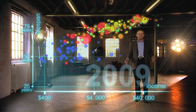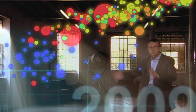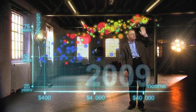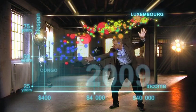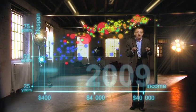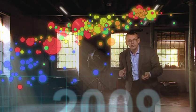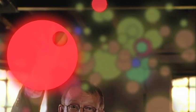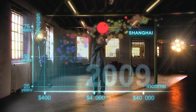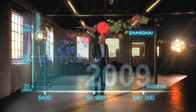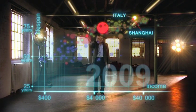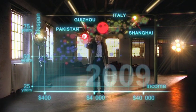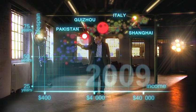And now we can see the world today in the most up-to-date statistics. Most people today live in the middle, but there are huge differences between the best and worst of countries, and also huge inequalities within countries. These bubbles show country averages, but I can split them. Take China — I can split it into provinces. There goes Shanghai: it has the same wealth and health as Italy today. And there is the poor inland province Guizhou — it is like Pakistan. And if I split it further, the rural parts are like Ghana in Africa.